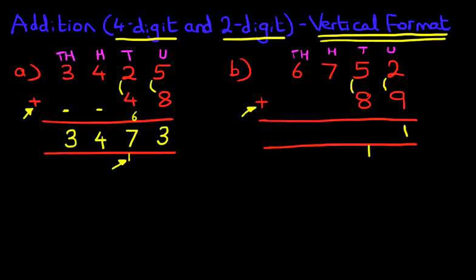Now we're going to add the tens. 5 plus 8. So what is 5 plus 8? 5 plus 8 is the same as 8 plus 5. The answer is 13. But don't forget the 1 here. 13 plus 1 is 14. 1 here and 4 here.